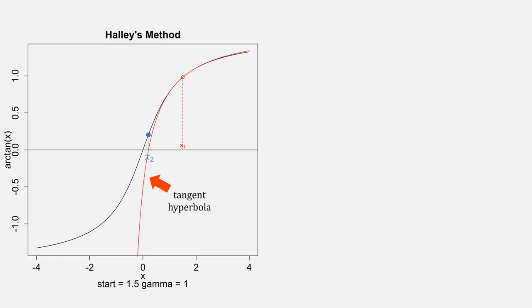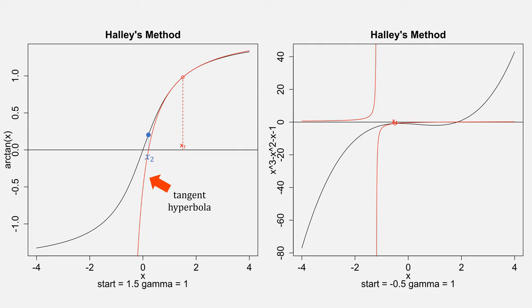With Halley's method, we draw that tangent hyperbola to come up with our new value for x₂. This may not look like a tangent hyperbola unless we zoom out or use a different function, which is much more clear here, to come up with our next value for x₂.